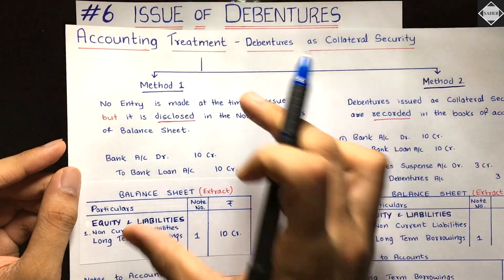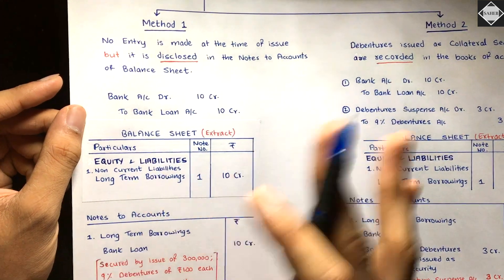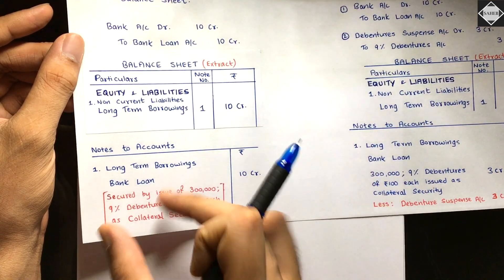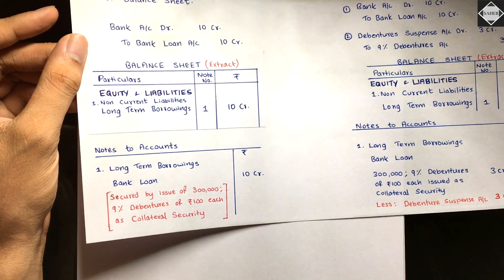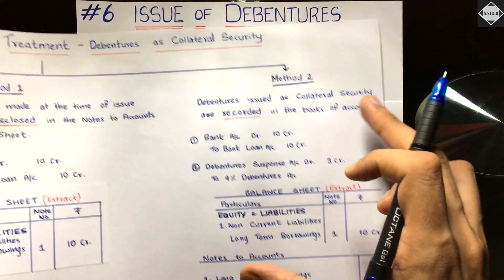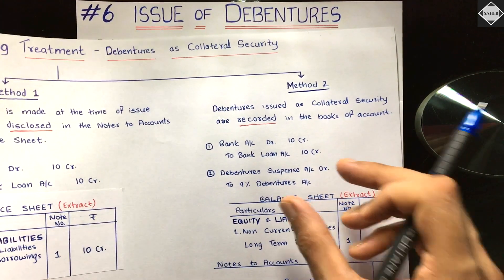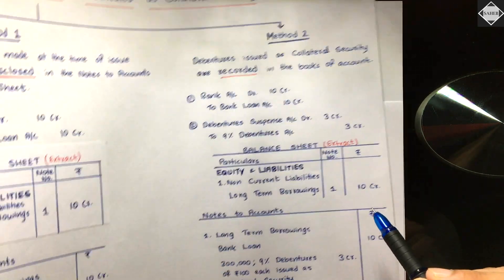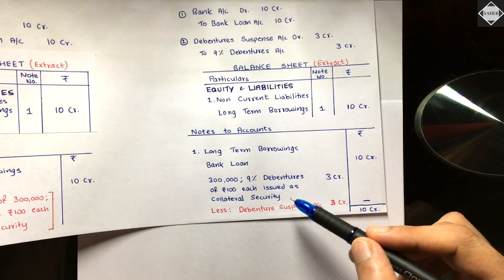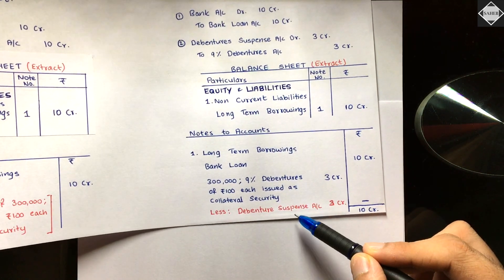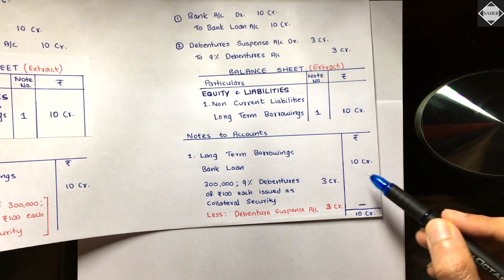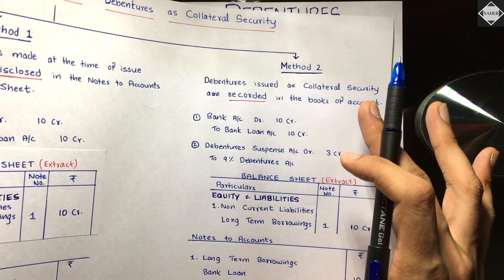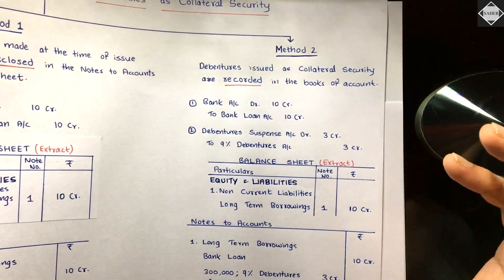There are two methods in this topic. In Method 1, we do not record the debentures — we just give a disclosure below the loan which is secured by the debentures. In Method 2, we record the debentures, but the debit would be to the Debenture Suspense Account. Because of this, in the notes to accounts, we subtract it with the debenture suspense, and it will not appear anywhere in the balance sheet.